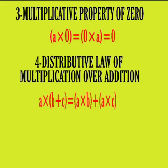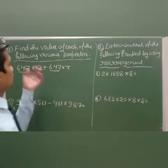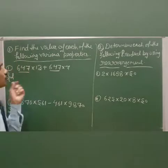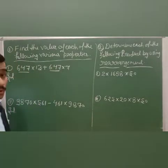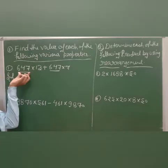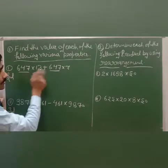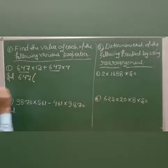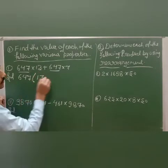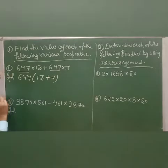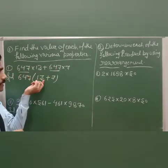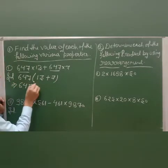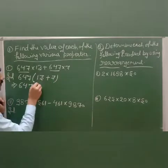Now I am going to solve some questions. Question number 1: Find the value of each of the following using various properties. First question: 647 into 13 plus 647 into 7. You can see 647 appears in both terms, so first you take 647 as common factor. We have 647 into bracket 13 plus 7, which gives 647 into 20.